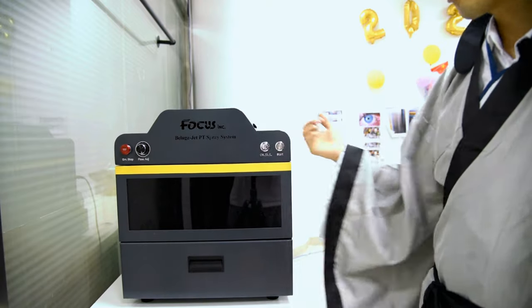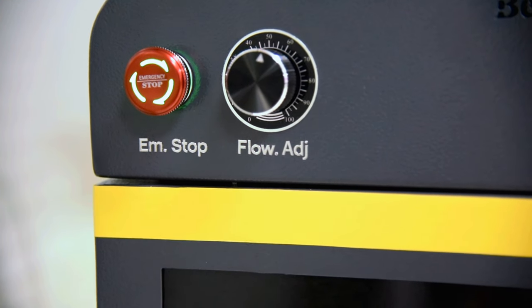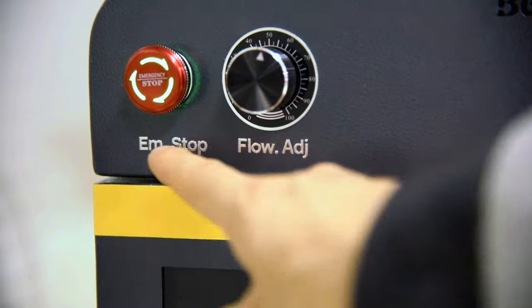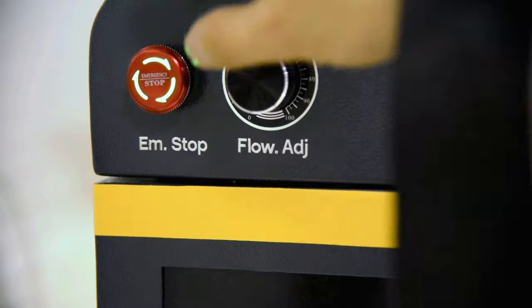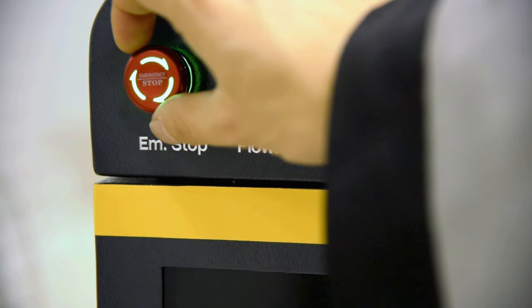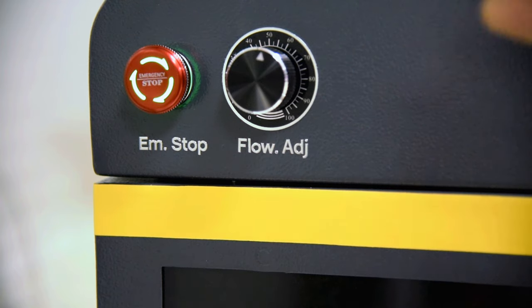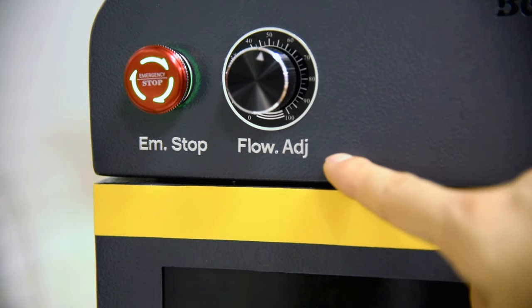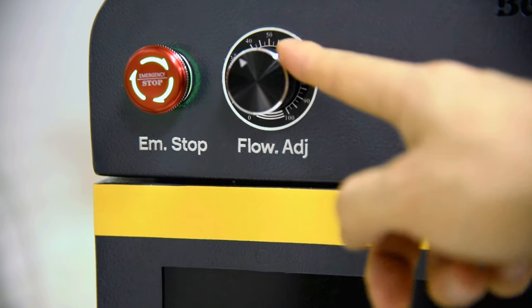At the front we can see there are lots of functions. When we power on the machine and go to the front side of the blue gadget, we can see there are lots of function buttons. First is the emergency button - when you push down it has alarm sounds coming out, and when you take it out it connects the power for operation. The second one is flow adjustment to adjust the pretreatment speed and also the amount.